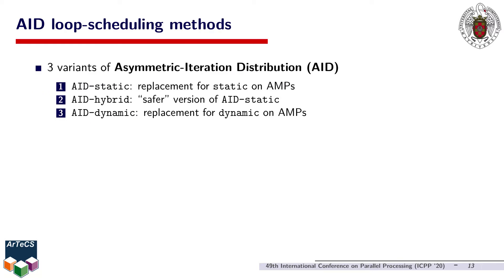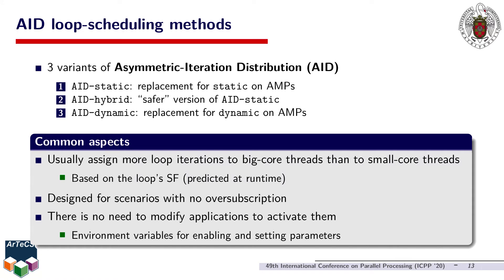We created three loop scheduling methods for asymmetric multicore processors. AID-static, the first method, is meant as a replacement for the conventional static schedule on AMPs. AID-hybrid is a variant of AID-static that overcomes some of its main limitations, which we will describe later. Finally, AID-dynamic constitutes an alternative to the conventional dynamic schedule. All methods typically assign a different number of iterations to worker threads based on the core type they run on, and they do so by catering to the speedup factor of the loop, which is predicted at runtime.